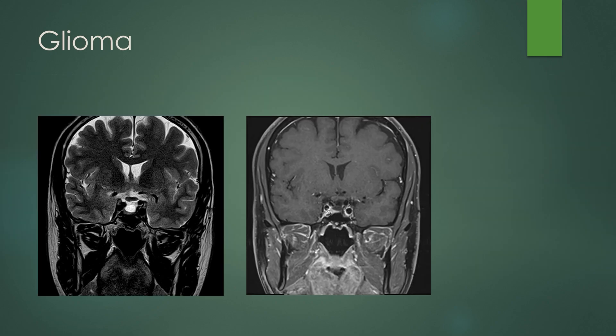Optic glioma can be seen in NF type 1. You can also see just asymmetric enlargement of one of the optic nerves. Here the right aspect of the chiasm is almost twice the size of the left optic nerve. This one is not enhancing, but you can see that asymmetric enlargement — this is an optic nerve glioma in an adult.